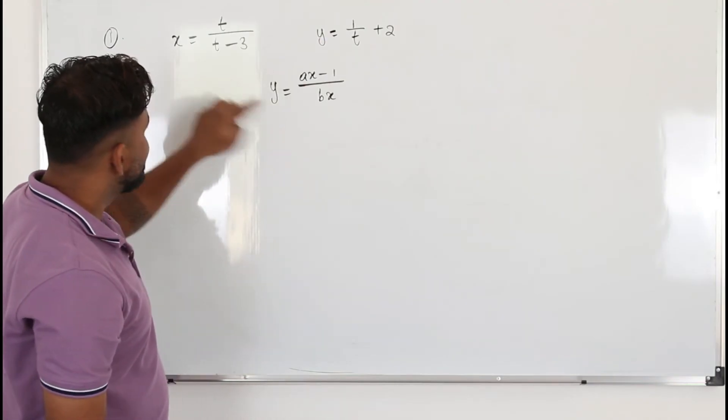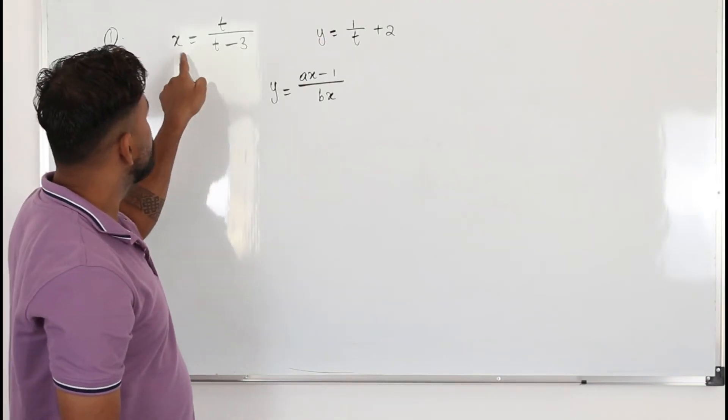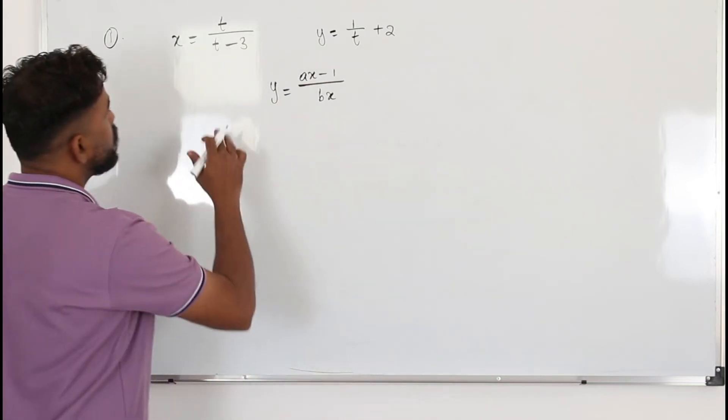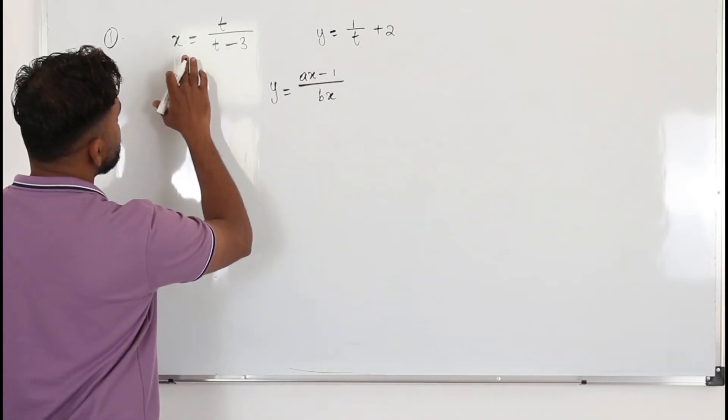Here we need to frame this Cartesian equation from these two parametric equations. So what we can do, you can make t as a subject from here.